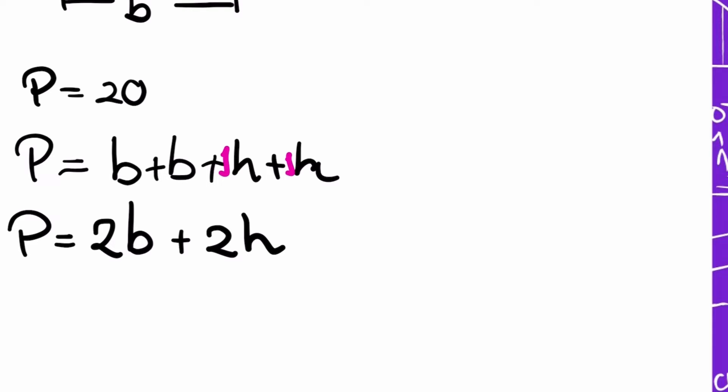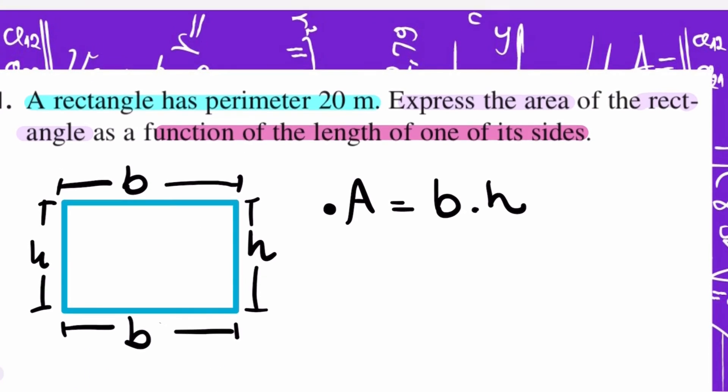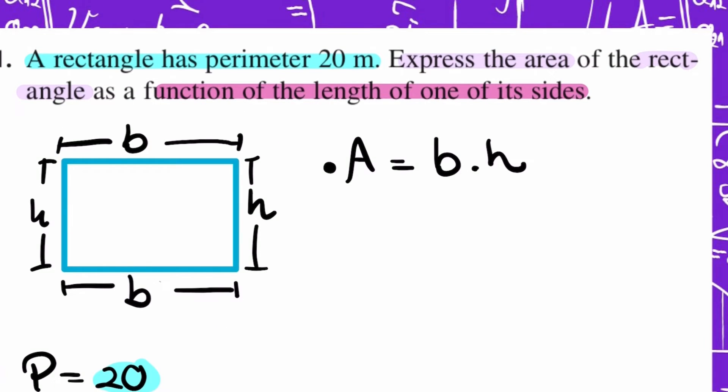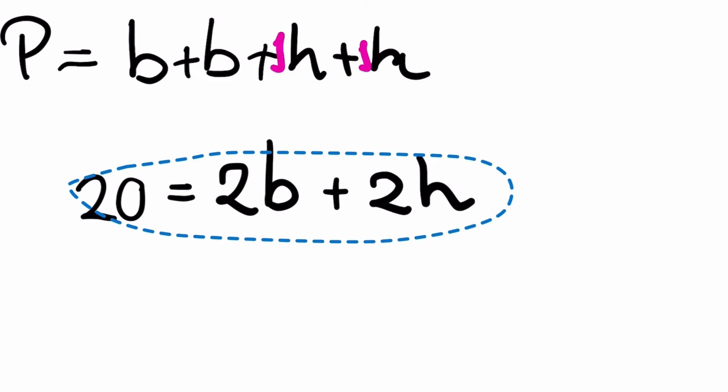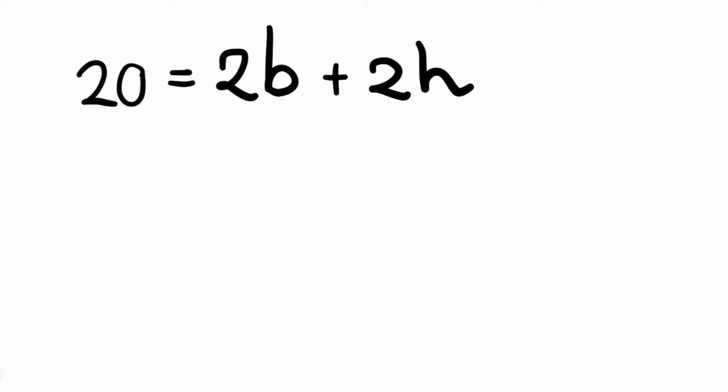I know that the perimeter is 20. I can put here 20 equals 2b plus 2h. They are asking us for a function of the length of one of its sides. I need to find, it doesn't matter if it's h or b. In this case, I'm going to choose b, but it's the same if you choose h. I'm going to find b. This is positive, so I'm going to pass it to the other side of the equation as negative.